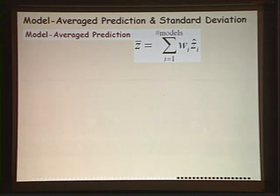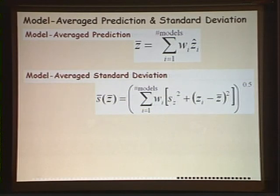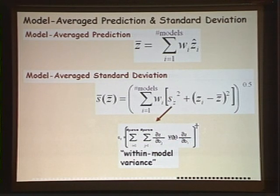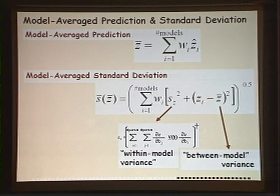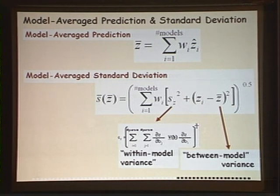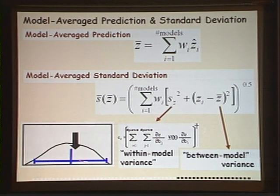To use the weights, we get a model average prediction by taking the weight for each model times its prediction and summing them up. For a model average standard deviation, we weight the combination of the individual model variance — calculated earlier — and the between-model variance, which is the prediction of each model minus the model average prediction squared. We weight that variance by the weight for each model and take the square root to get the standard deviation. If we've been reasonable about evaluating the scope of conceptual models, we begin to capture that large blue confidence interval.